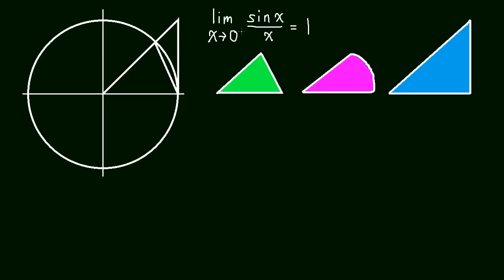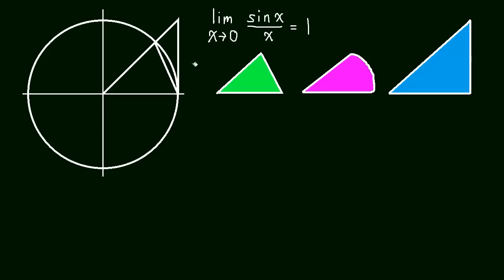The idea of this video is to prove that the limit as x approaches 0 of sin x over x equals 1. I have this figure drawn with three different colored shapes. I took this triangle here and pulled it out and drew it separately, then I took this sector of the circle here and pulled it out separately, and then I took this larger triangle and pulled it out separately, just so we can see what we're really talking about.